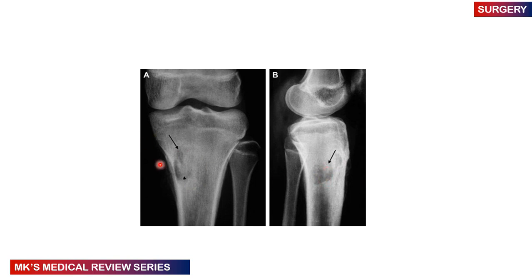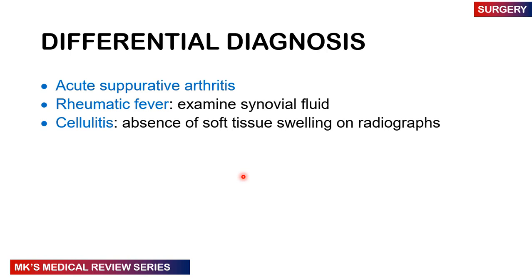This is an example of an osteolytic lesion — as you can see, it is affecting this bone here, which is the tibia in the lower limb, and on this side is the fibula. The differential diagnosis includes acute septic arthritis, rheumatic fever, and cellulitis — the absence of soft tissue swelling on the radiographs can help differentiate.